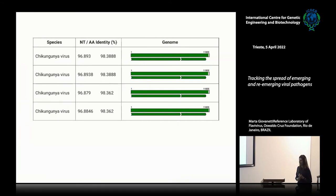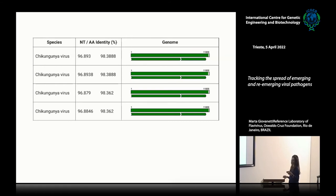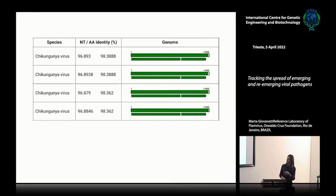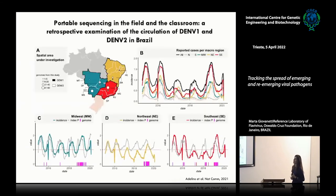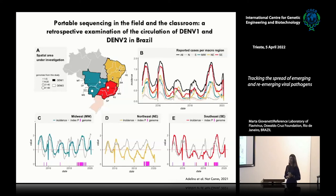We tried to validate this protocol by analyzing chikungunya historical samples using both the targeted protocol and the untargeted metagenomics approach. We obtained with metagenomics a really higher genome coverage, much higher than the one obtained by using the targeted protocol. In Midwest Brazil, we described for the first time the emergence of two distinct lineages of two different serotypes of dengue — dengue 1 and dengue 2.